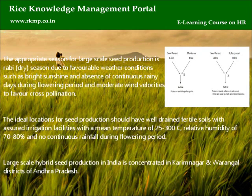The appropriate season for large-scale seed production is the rabi dry season, due to favorable weather conditions such as bright sunshine, absence of continuous rainy days during flowering period, and moderate wind velocities to favor cross-pollination. The ideal locations for seed production should have well-drained fertile soils with assured irrigation facilities, a mean temperature of 25 to 30 degrees centigrade, relative humidity of 70 to 80 percent, and no continuous rainfall during the flowering period.